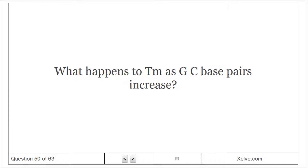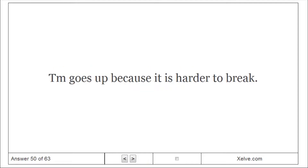What happens to Tm as G-C base pairs increase? Tm goes up because G-C bonds are harder to break.